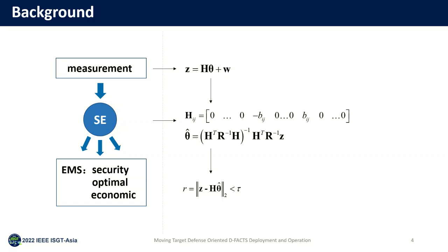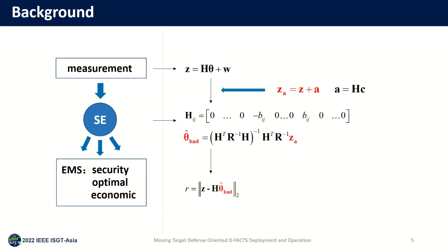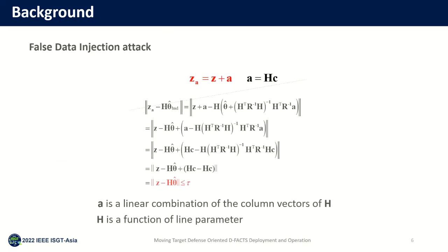Then the control center will check it using bad data detection based on the residual between the true and estimated value of the measurement. In this process, the attacker can tamper with the original measurement values, which can affect the system state estimation results. Our study addresses a typical data attack called false data injection attack. The FDI attacker is a linear combination of the column space of matrix H, and this type of attack can bypass bad data detection.